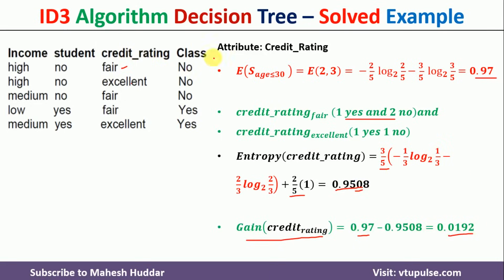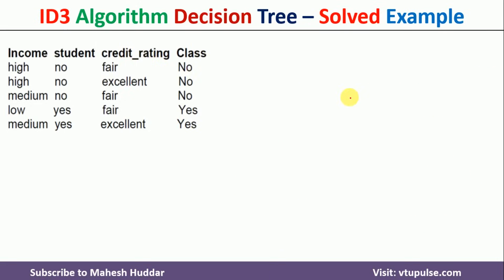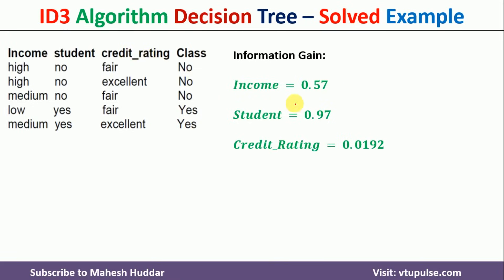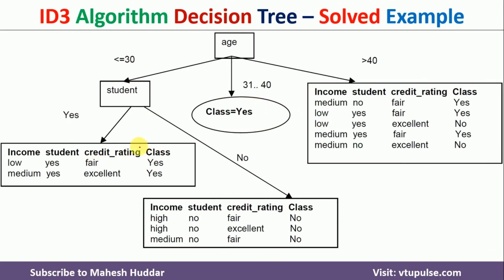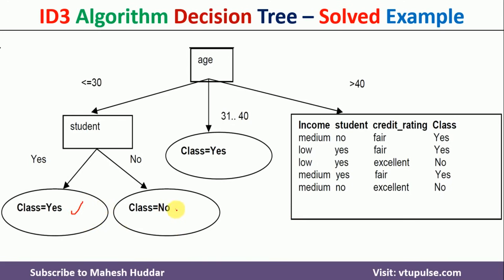Comparing the information gains for all three attributes in this subset: student has the maximum information gain at 0.97. So student is selected as the root node for this subtree. The student attribute has two branches: yes and no. For the yes branch, all examples are class yes, and for the no branch, all examples are class no.